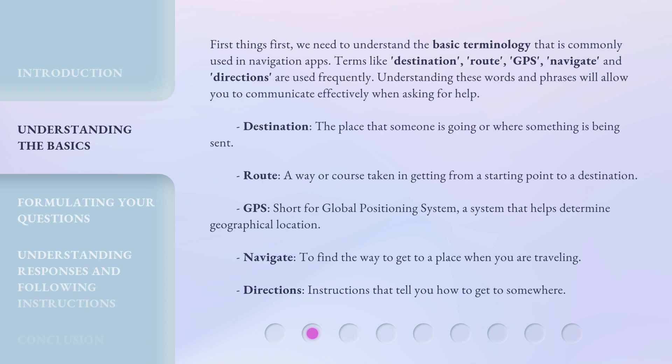Destination: the place that someone is going or where something is being sent. Route: a way or course taken in getting from a starting point to a destination. GPS: short for Global Positioning System, a system that helps determine geographical location. Navigate: to find the way to get to a place when you are traveling. Directions: instructions that tell you how to get to somewhere.